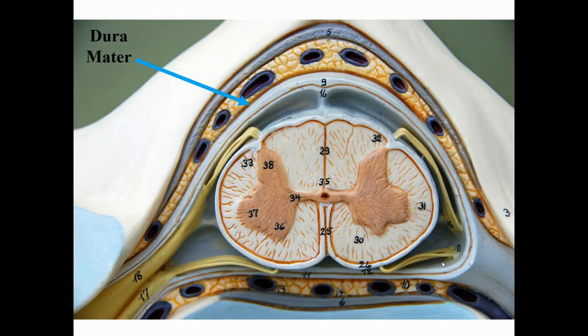We already looked at the elastic ligament and the epidural space. Just deep to that — labeled number nine on this model — is the dura mater. The dura mater is the thick, leathery outer layer of the three membranes that protect the spinal cord.